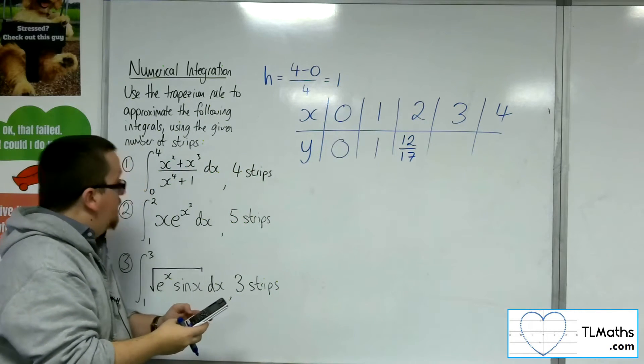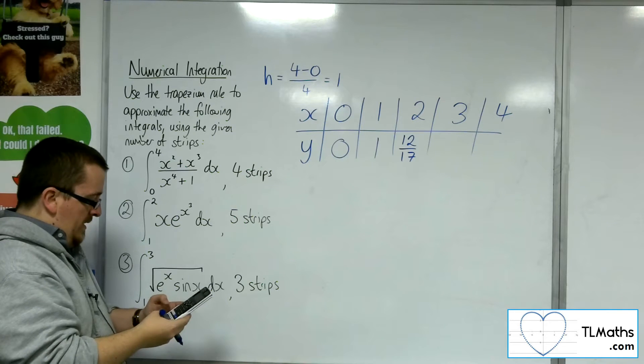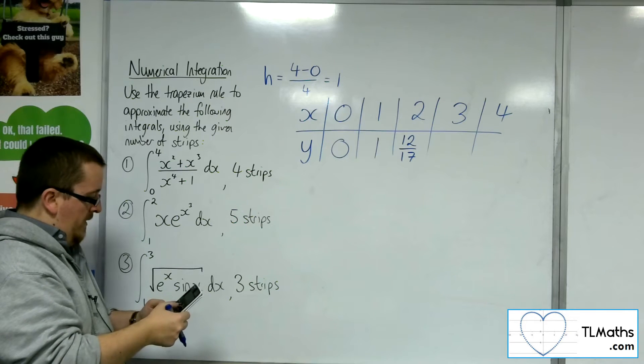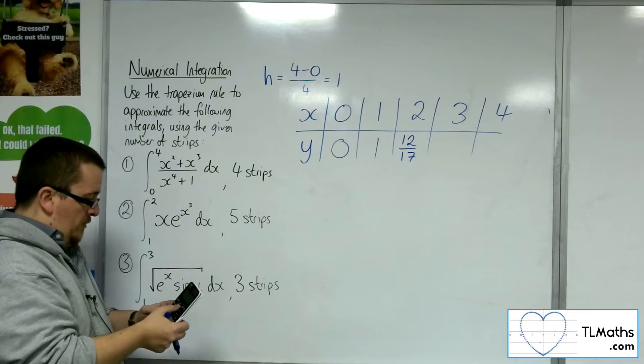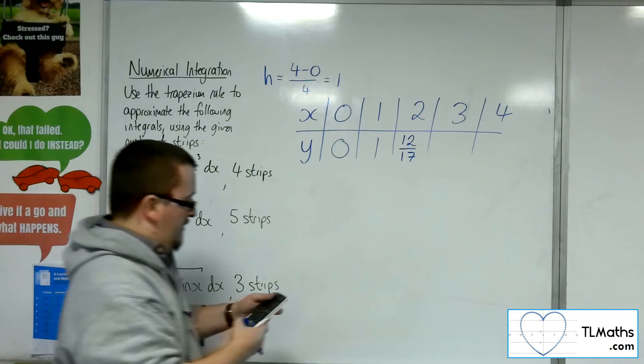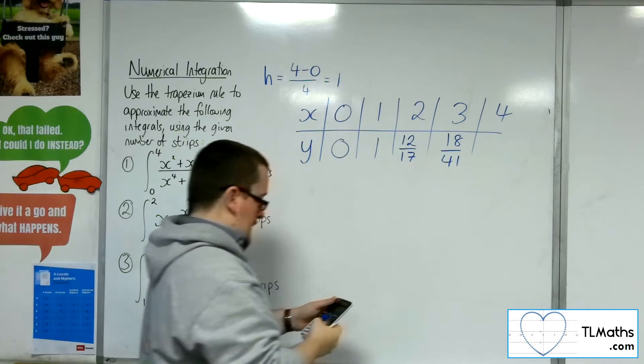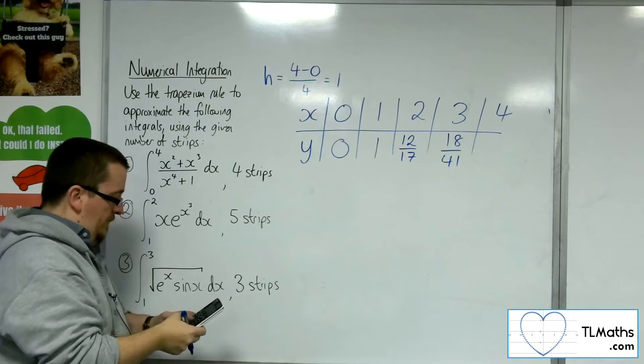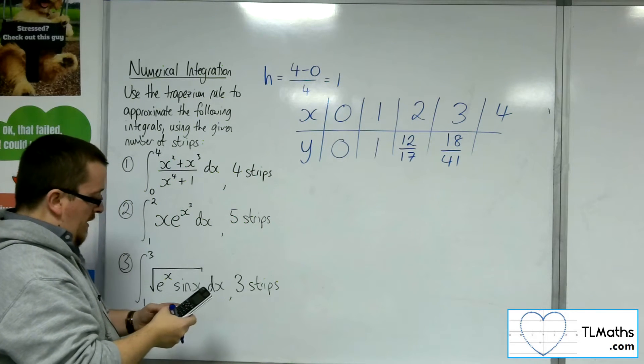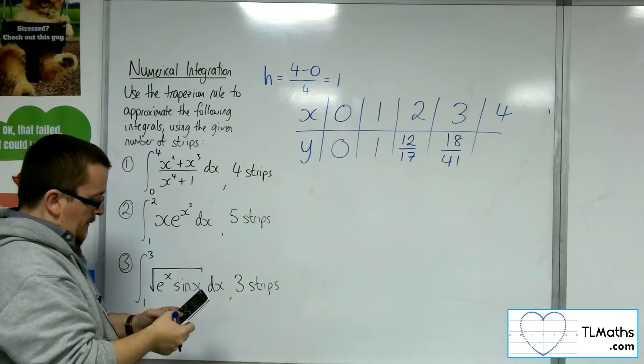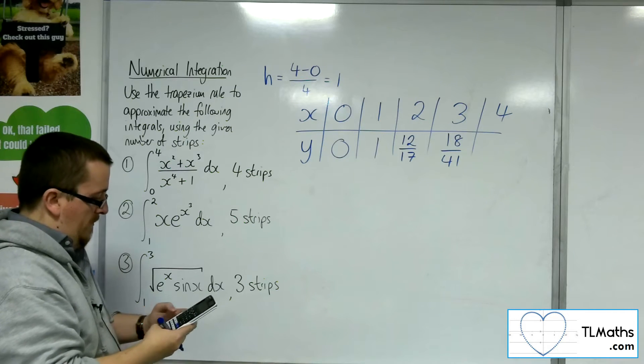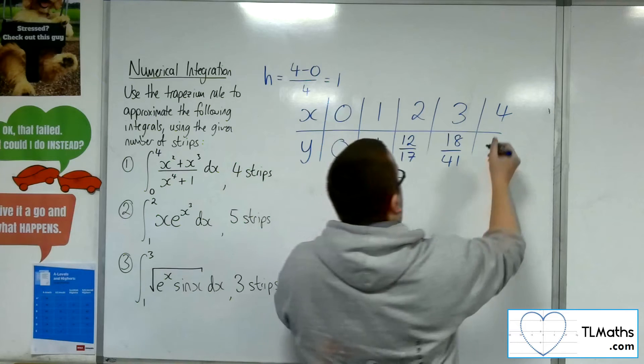Now if we try it with three, we're going to get three squared plus three cubed over three to the power of four plus one. So that's 18 over 41, and if we try it with four, we get four squared plus four cubed over four to the power of four plus one. So 80 over 257.